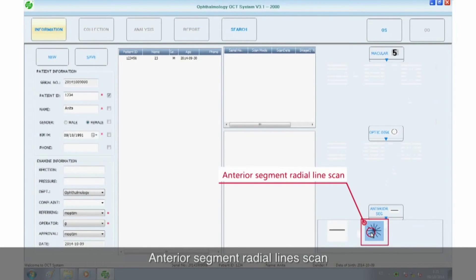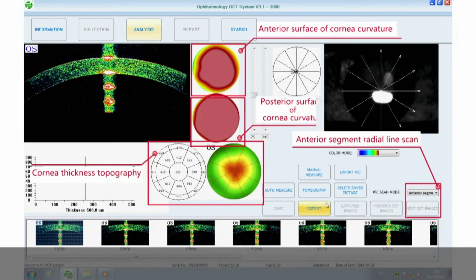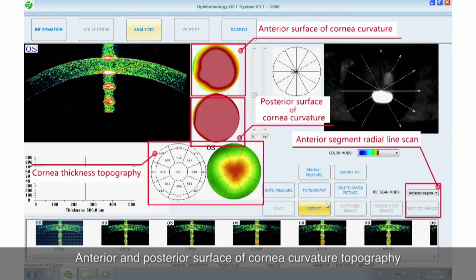Anterior segment radial line scan will generate cornea thickness topography, anterior and posterior surface of cornea curvature topography.